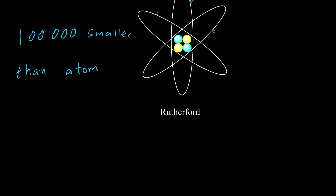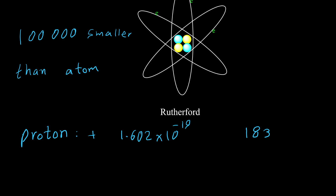Later, by studying atomic structure, different scientists discovered that in addition to electrons we have two more particles inside the atom. Proton — proton has positive charge and the amount of its charge is exactly equal to the electron's charge, but the mass of a proton is almost 1836 times heavier than the electron.